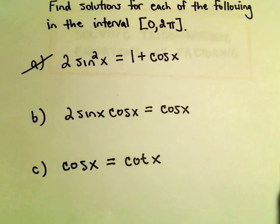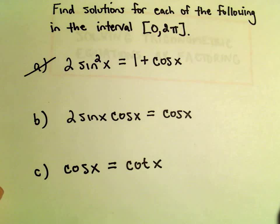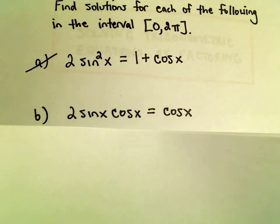In this video we're going to do another example of solving a trig equation by factoring. Here we're going to solve 2 sine x times cosine x equals cosine x.